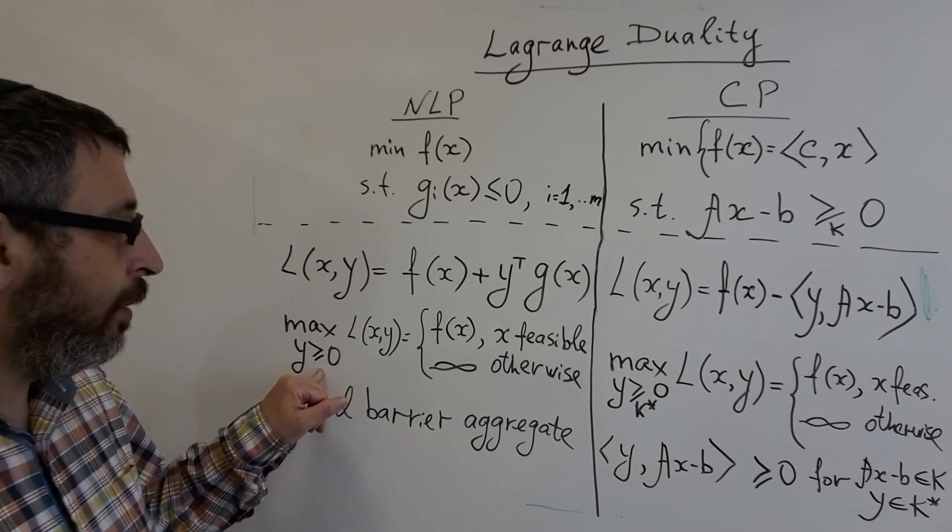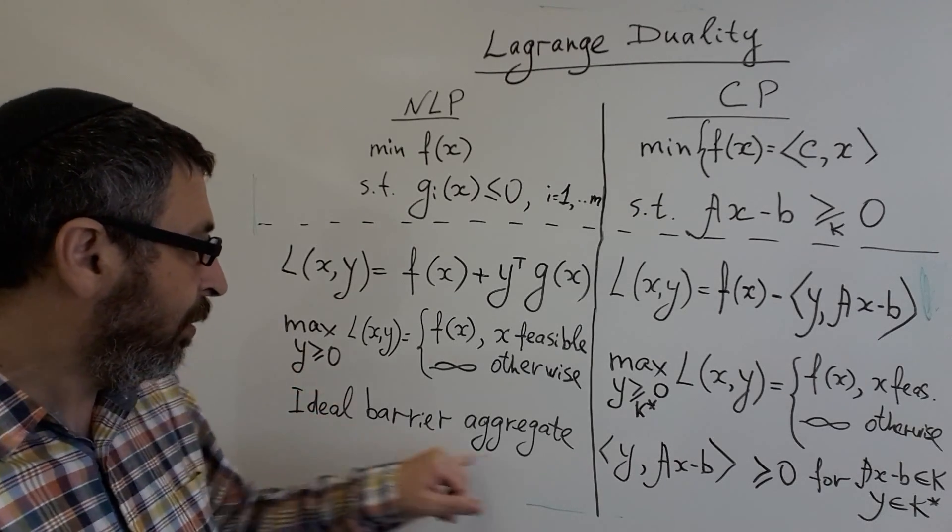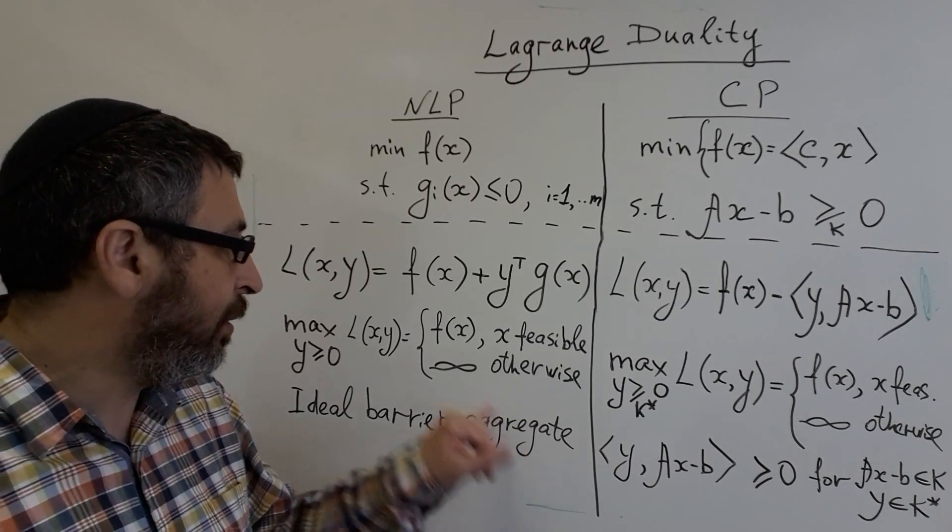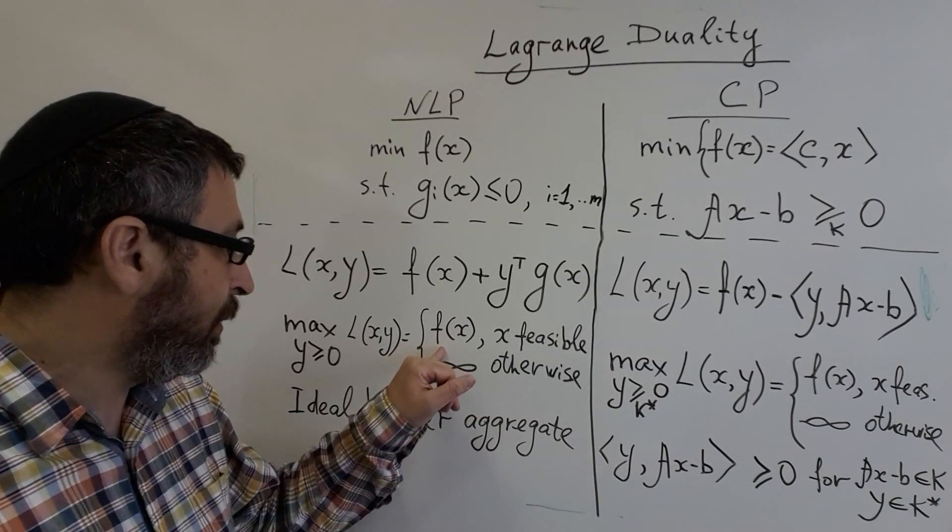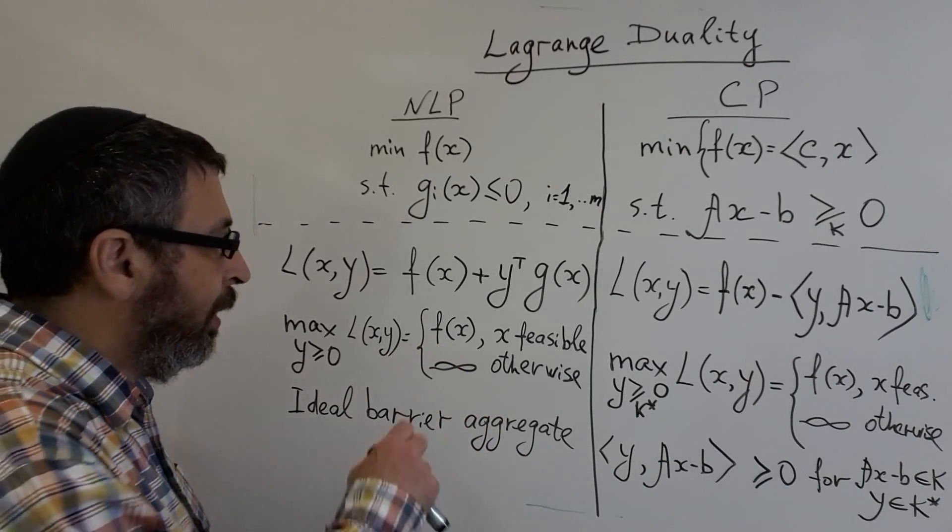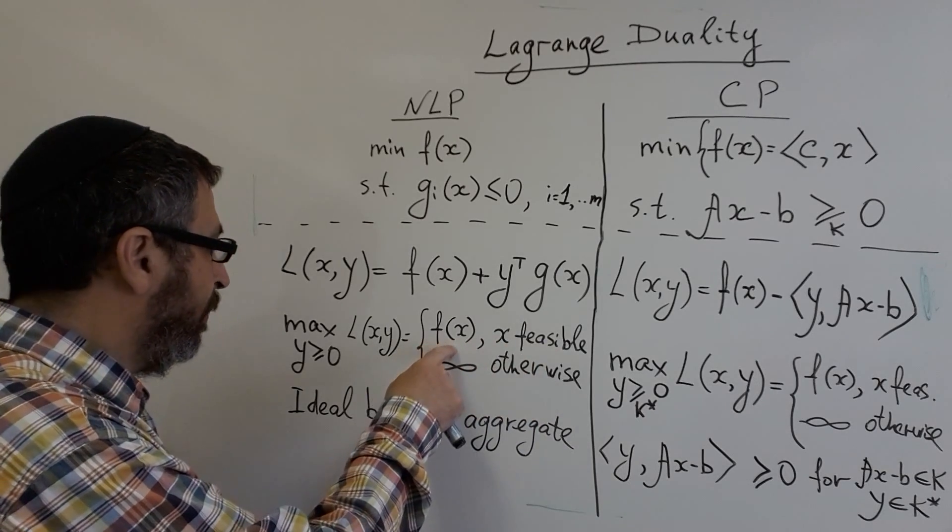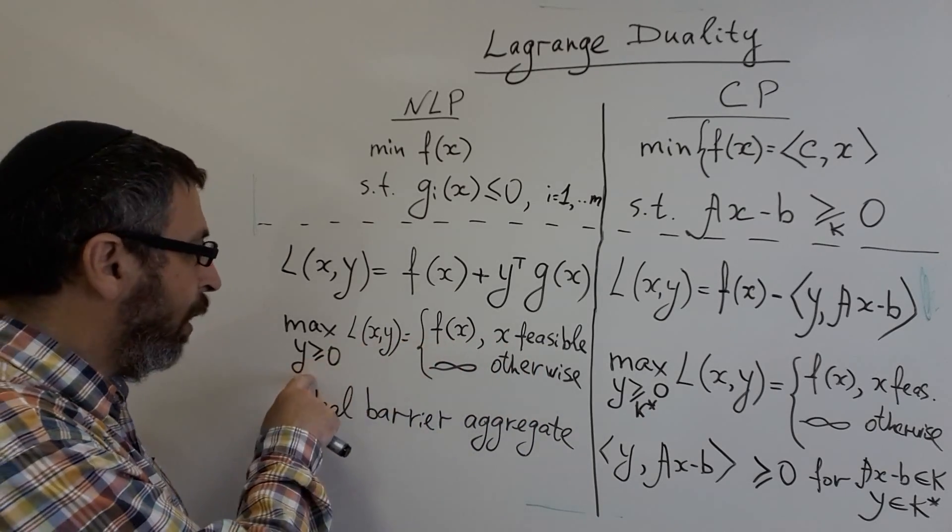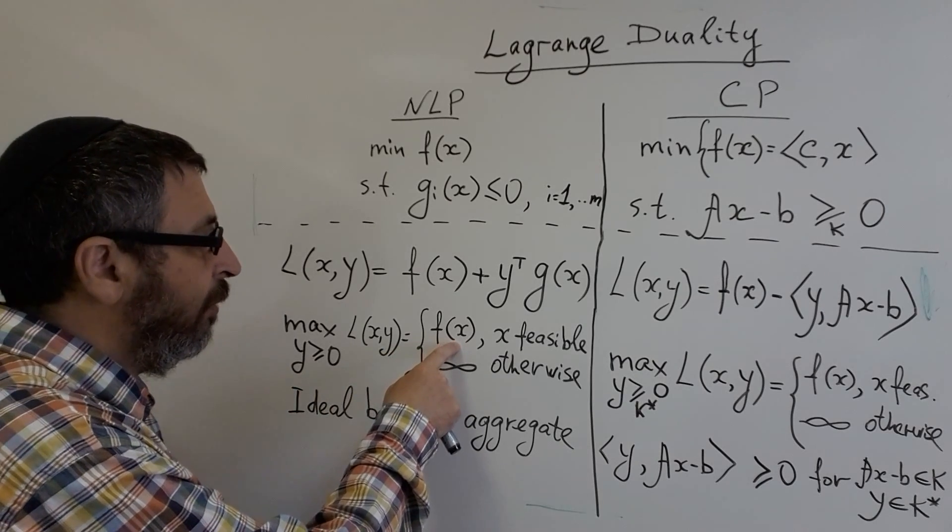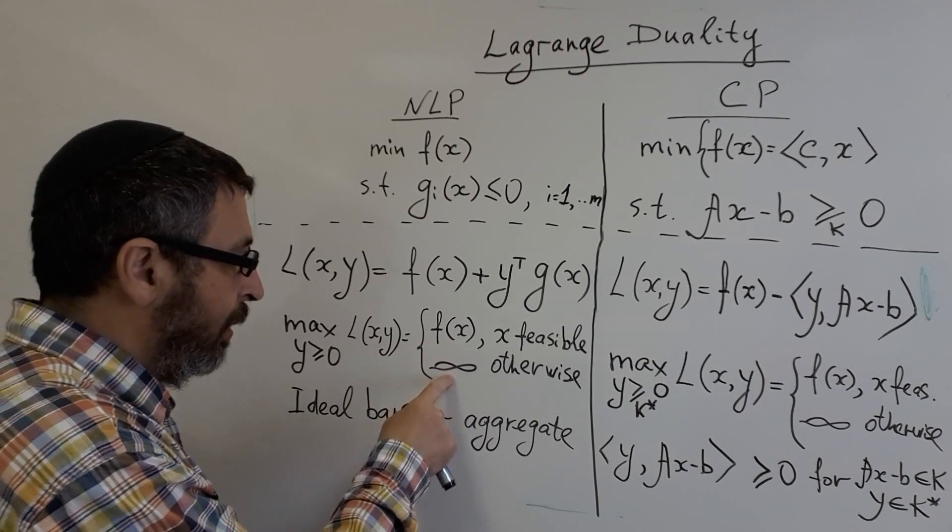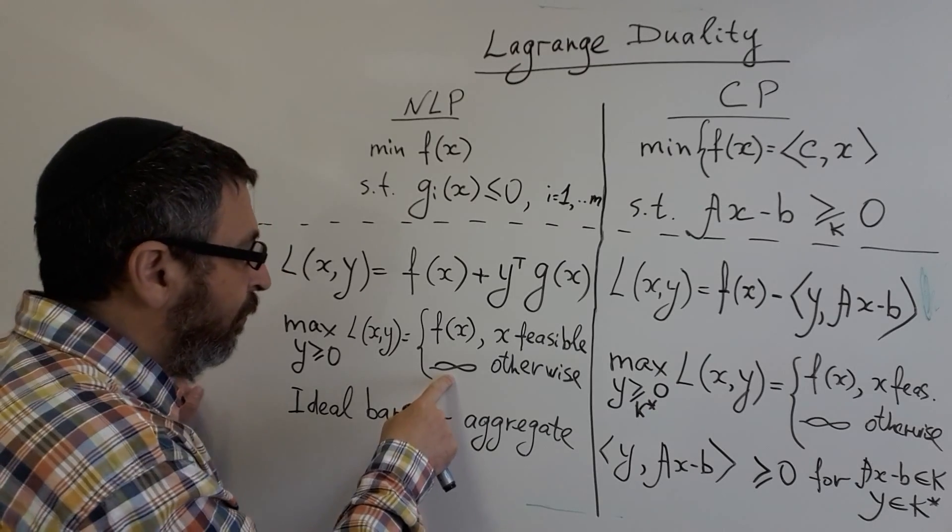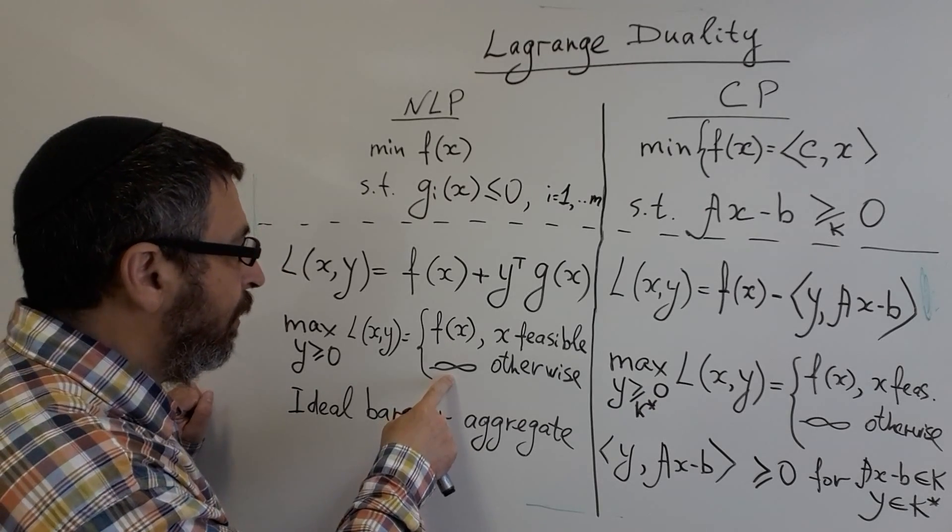An important property of the Lagrangian is when we maximize it over feasible Y, we get an ideal barrier aggregate with respect to X. Namely, if X is feasible, the maximum over Y is just F, and if X is non-feasible, the maximum is infinity.